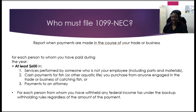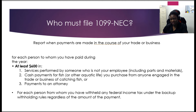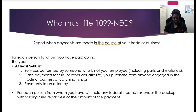Now the new 1099 NEC — you would file this for businesses that you paid at least $600 for services performed by someone who is not your employee. This includes non-employee compensation, any cash payments for fish you purchase from anyone engaged in that trade or business, or payments to an attorney. Additionally, for each person for whom you've withheld any federal income taxes, you would need to report that on a 1099 NEC as well, regardless of whether you paid them the $600 threshold amount or not.